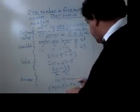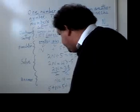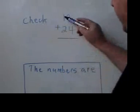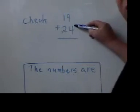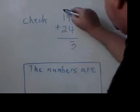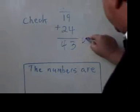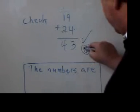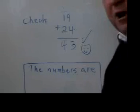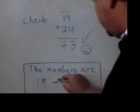So my numbers are 19 and 24. And you would do a check. I've got a check here. There are my two answers, and they should add up to 43. 9 and 4 is 13, carry a 1, and we get 43. So my answer is correct. I give myself a happy face. Then you should finish off your question by writing out in words: The numbers are 19 and 24.